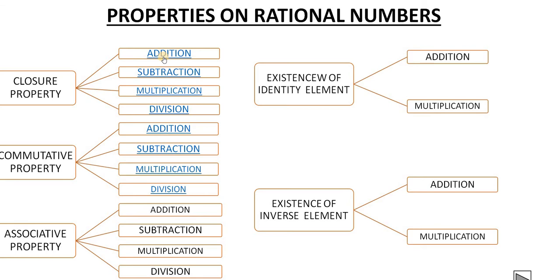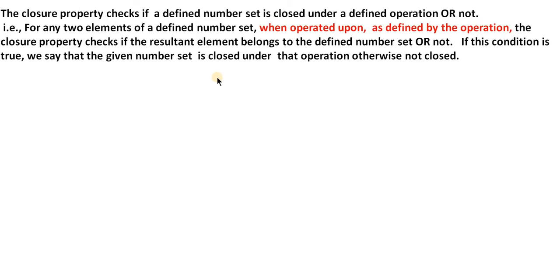Let us take the closure property under addition on rational numbers. Closure property means the set should be closed for the operation. The resultant element after the operation should be within that particular set. The closure property checks if a defined number set is closed under a defined operation or not. Here the defined number set is the rational number set.